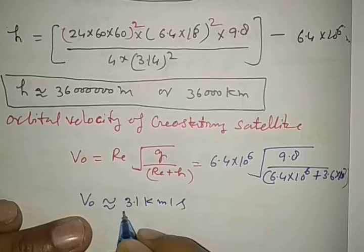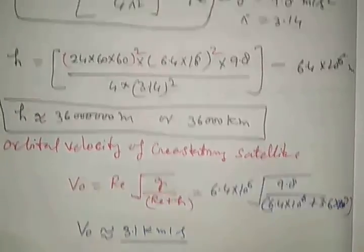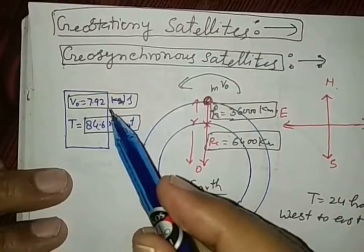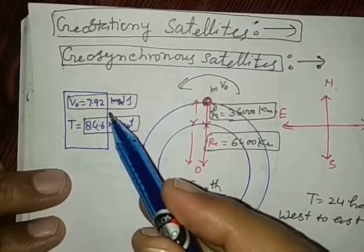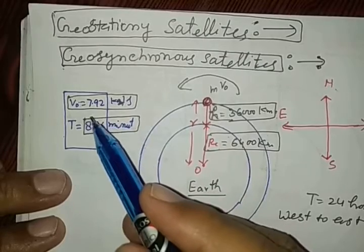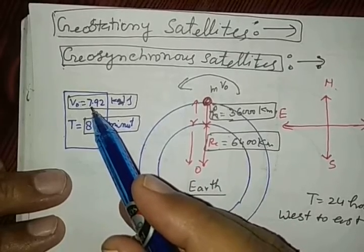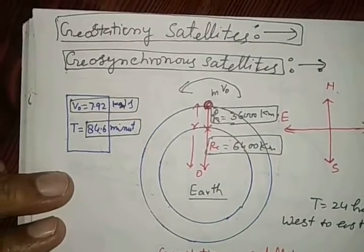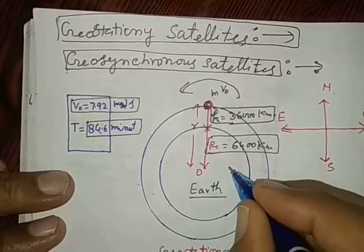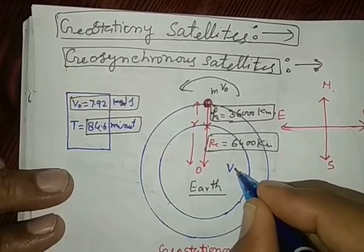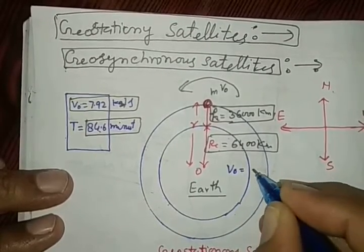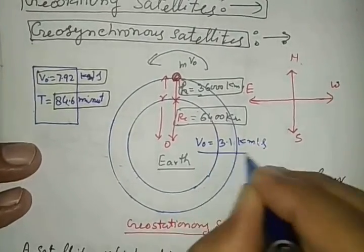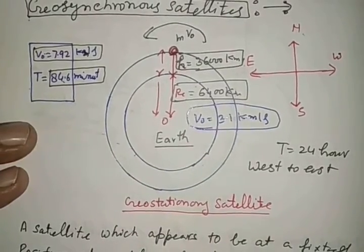Very less value. Understand: in comparison to the satellite which is launched near to the surface, about 300 km, which is almost 8 km per second, in comparison to this it is less. Orbital velocity must be 3.1 km per second.